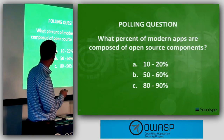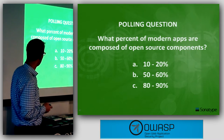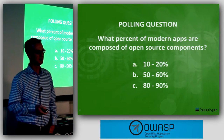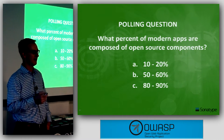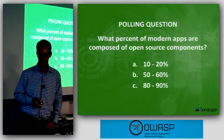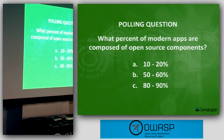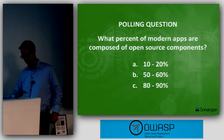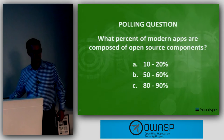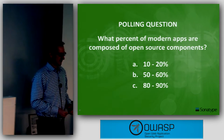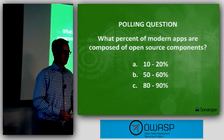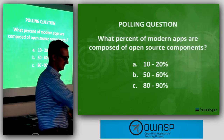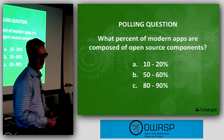This has an impact on the applications we develop. Anyone want to take a guess on the average percentage of open source and third-party components in an application today? The answer is 80 to 90 percent. We see about 80 to 90 percent of what's in a modern application is open source and third-party components.